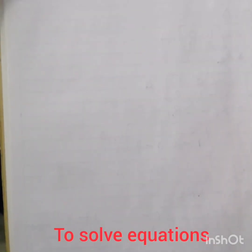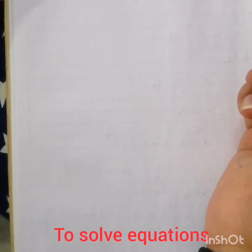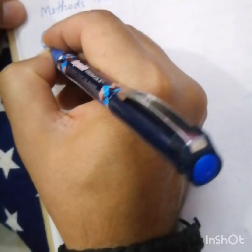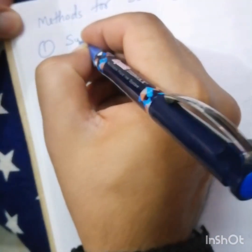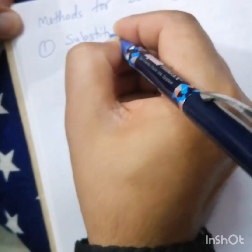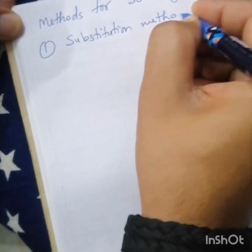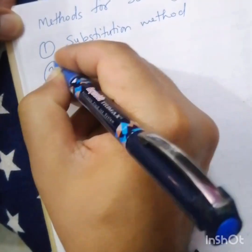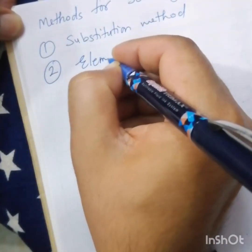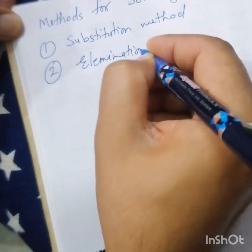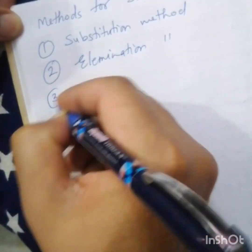After finding the solution by using the graphical method, we have other methods for solving pairs of linear equations: number one, substitution method; number two, elimination method; and number three, cross multiplication method.